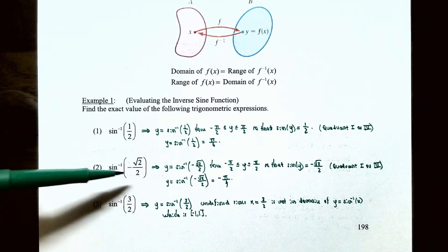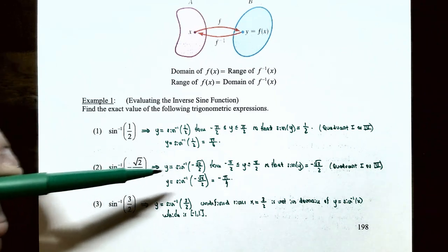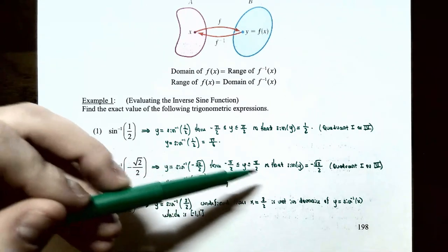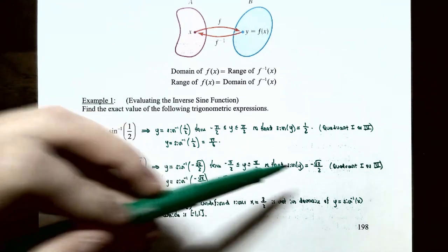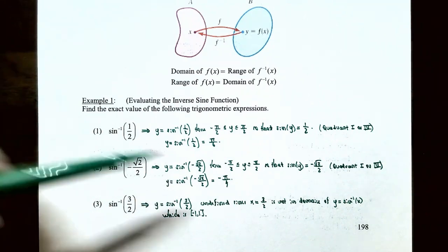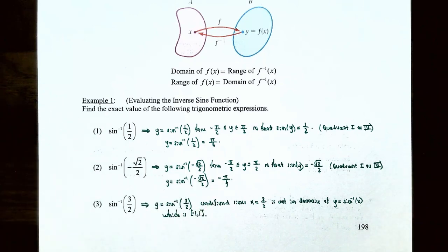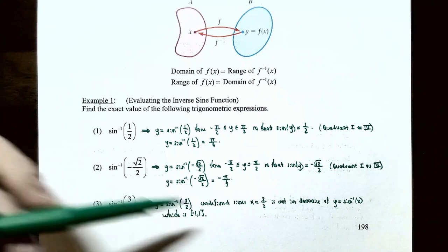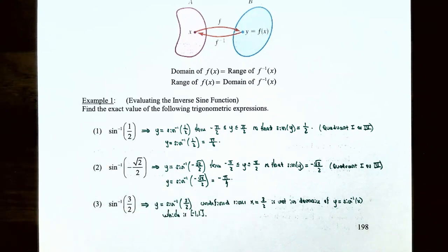Number three: sin⁻¹(3/2). Let y = sin⁻¹(3/2). However, this value is undefined because the input value 3/2 must be in the domain of the inverse sine function, which is [−1, 1]. Since 1.5 is not in that domain, this value is undefined.